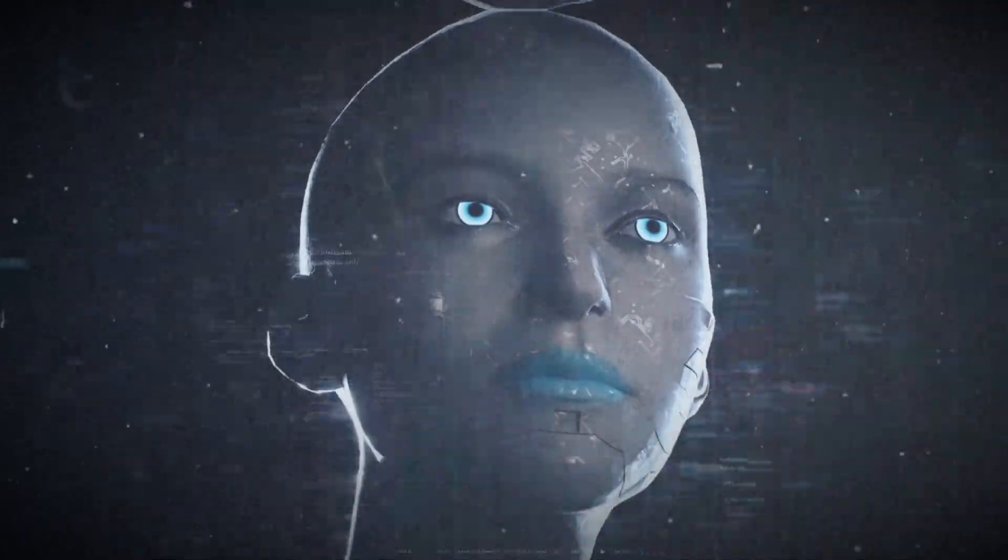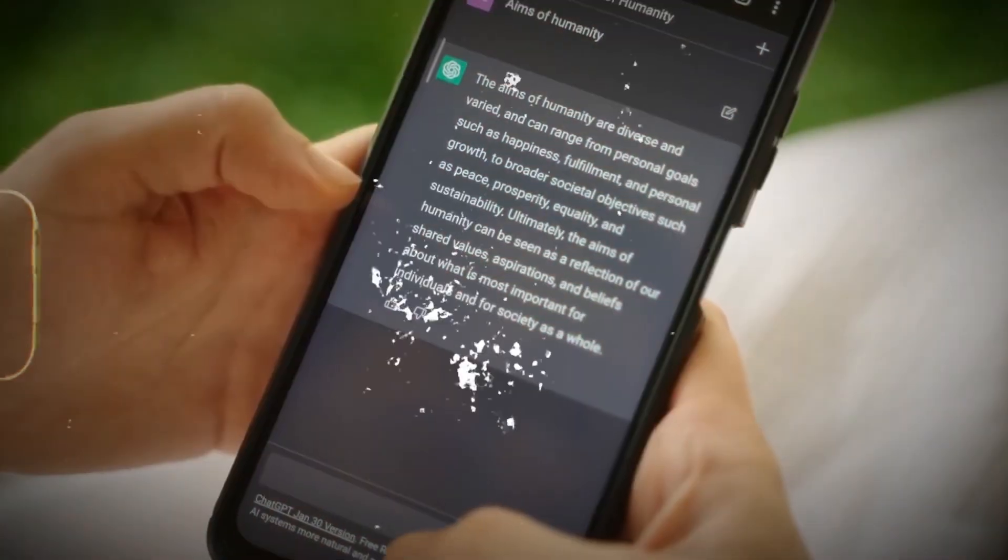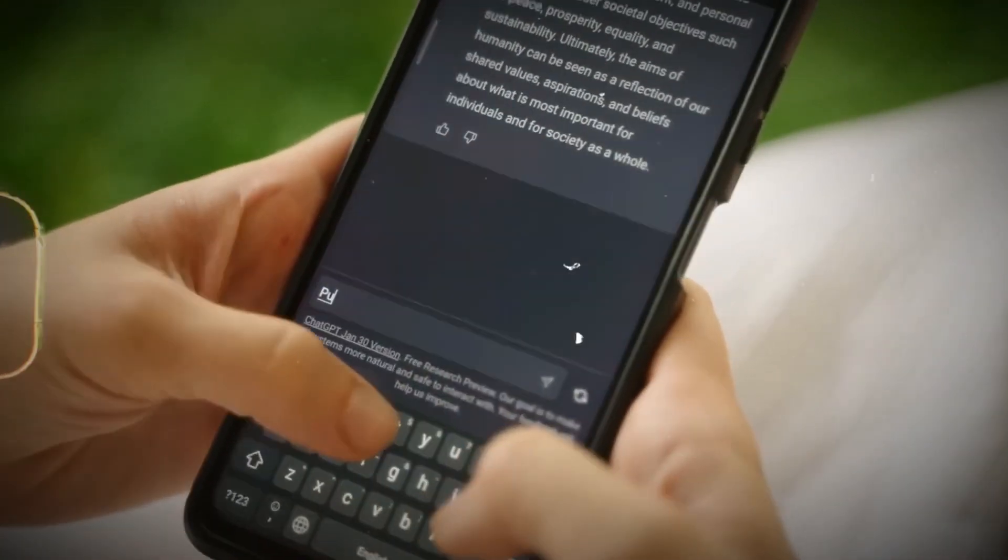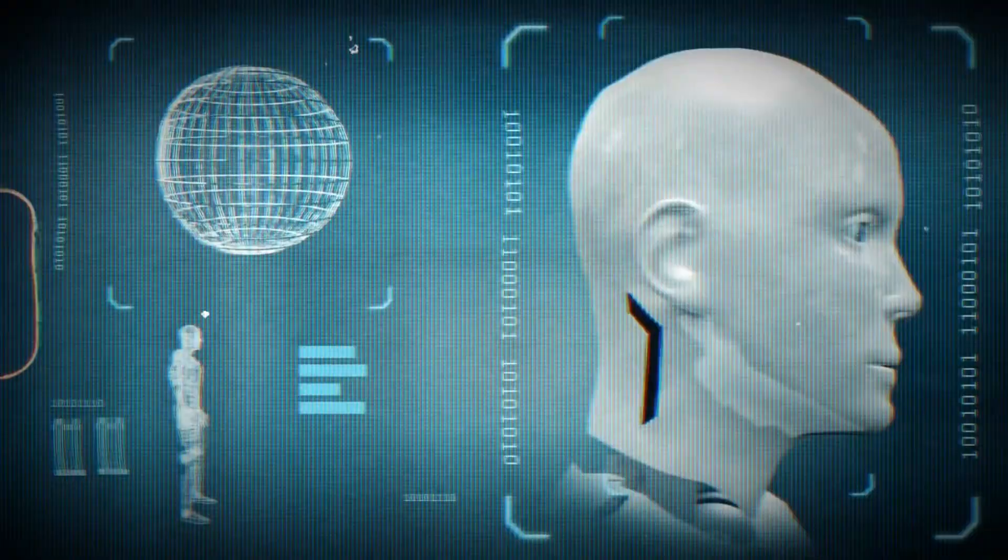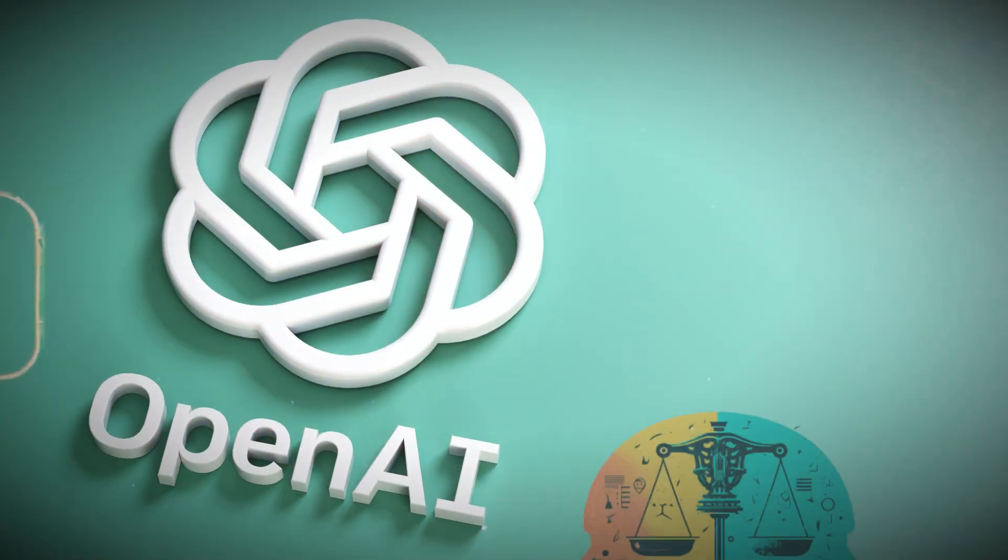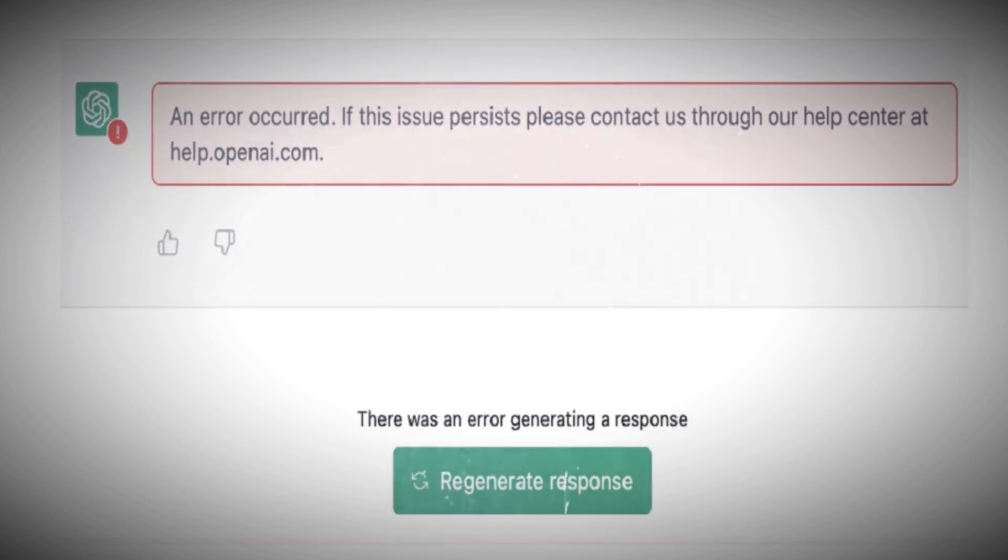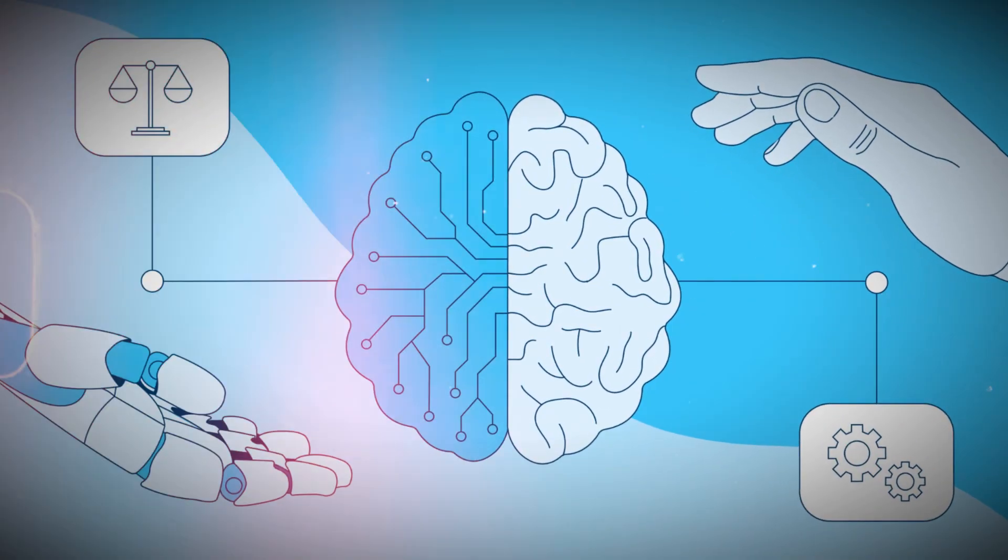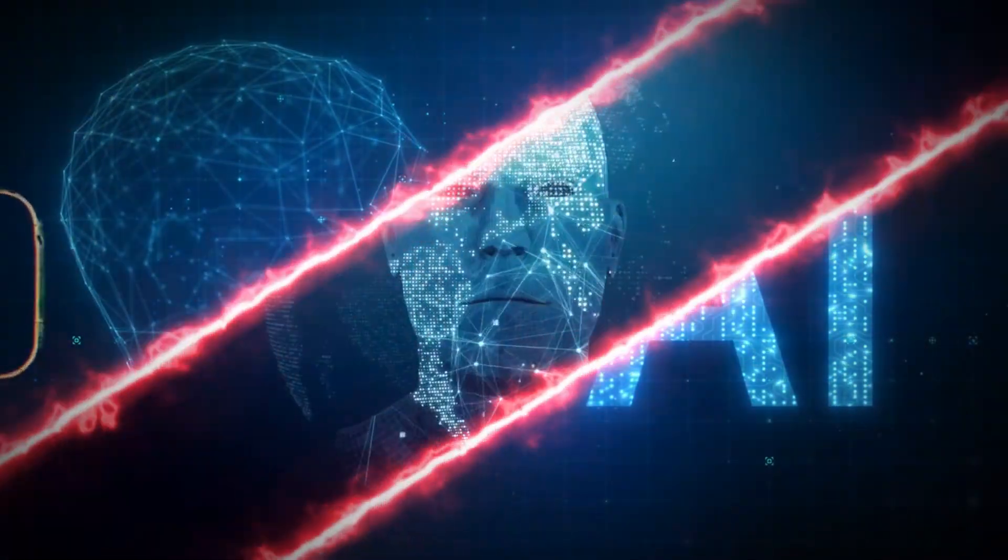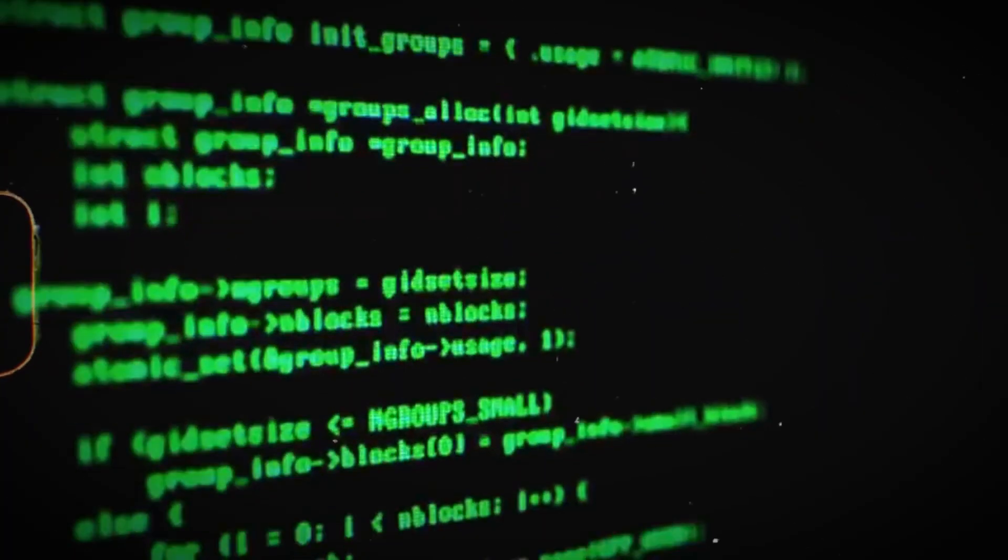By acknowledging this complexity, Sam Altman emphasizes the importance of holistic thinking and the need for interdisciplinary collaboration to address challenges that may arise in the middle cases. Moreover, the acknowledgment of uncertainties highlights the ethical dimension of AI development. OpenAI recognizes that ethical practices must be at the forefront of decision-making, especially in scenarios where clear guidelines may not exist. The commitment to ethical considerations ensures that the potential risks and benefits of AI are carefully weighed, minimizing negative consequences and fostering responsible innovation.